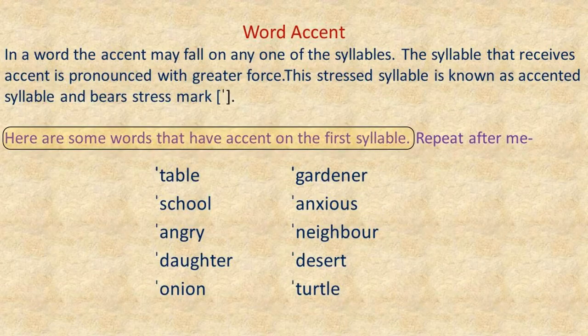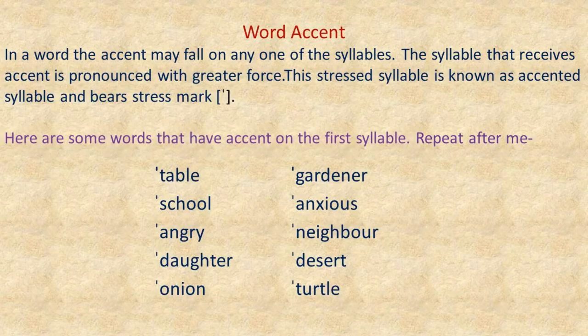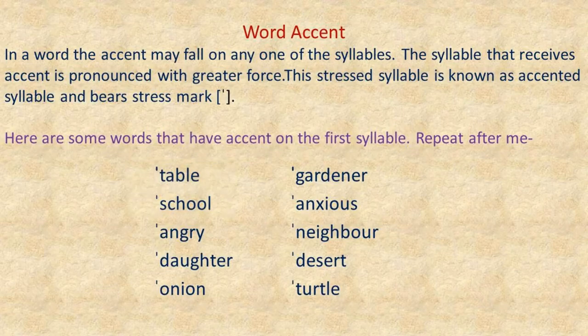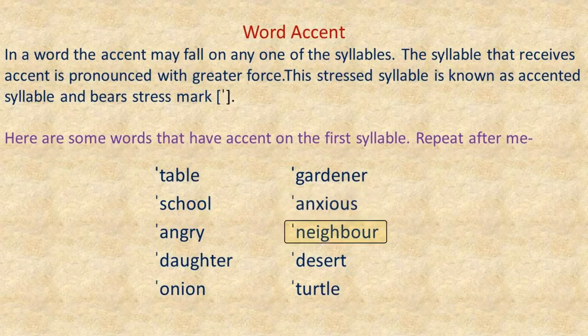Here are some words that have accent on the first syllable. Repeat after me: table, school, angry, daughter, onion, gardener, anxious, neighbor, desert, turtle.